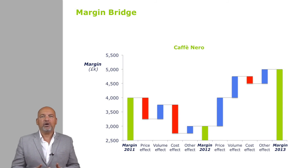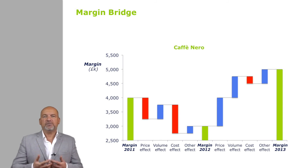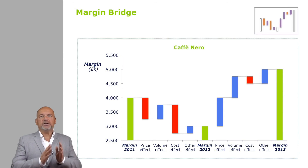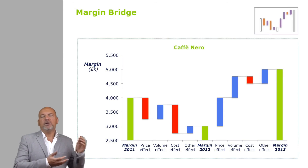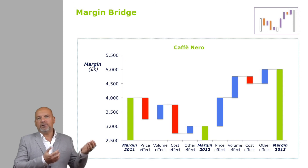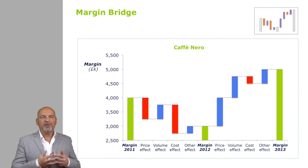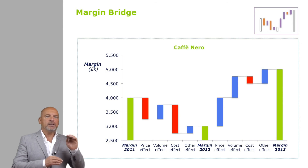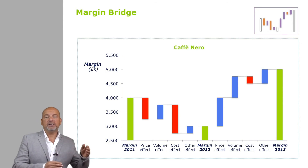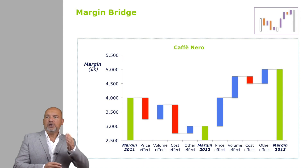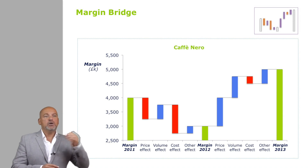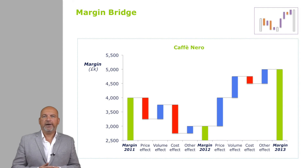The cost situation is getting better and we're a bit luckier with other contributors, so the margin is much higher. A margin bridge typically starts on the left with a tall bar and ends on the right with either a small or tall bar depending on your circumstances. From left to right, you plot side by side the effects that transfer the amount you're looking at — whether sales or margin on the left — to margin on the right.